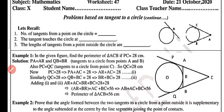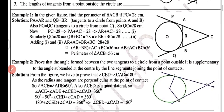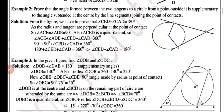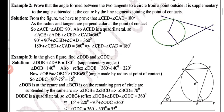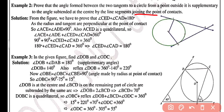Example number two: prove that the angle formed between two tangents to a circle from a point outside it is supplementary to the angle subtended at the center by the line segment joining the points of contact. We need to prove that angle CED and the center angle together equal 180 degrees.